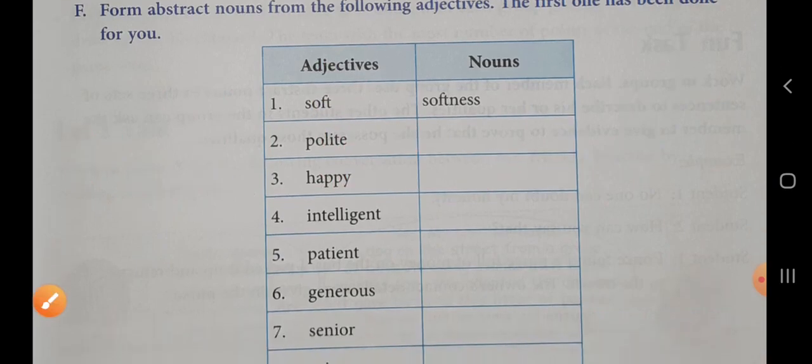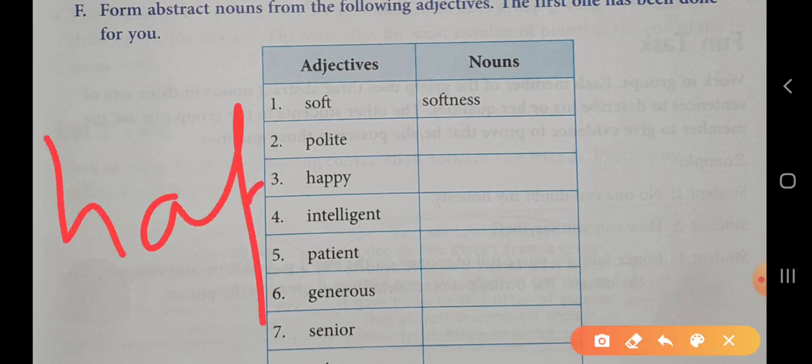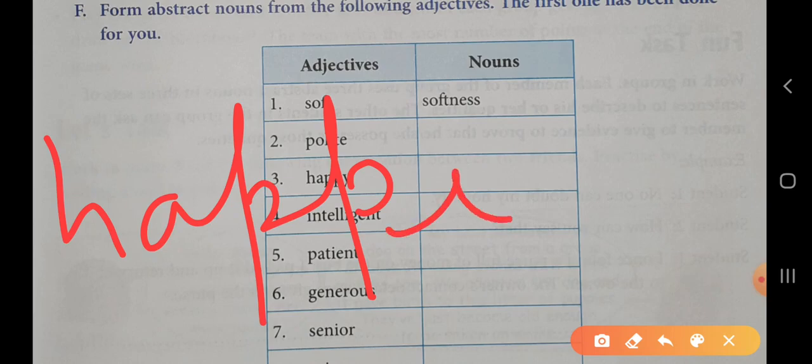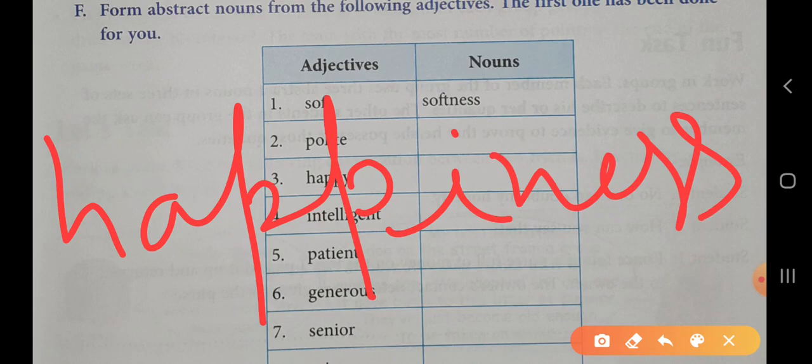For happy, the abstract noun will be happiness. H-A-P-P-Y was written in happy. Y is eliminated, I is added—that is H-A-P-P-I—and then N-E-S-S is added. This makes the abstract noun happiness.